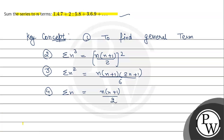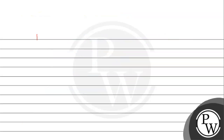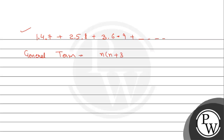Now, using this concept, let's solve the question. The series given is 1·4·7 + 2·5·8 + 3·6·9 + ... and so on. The first step: find the general term. The general term Tₙ is equal to n(n+3)(n+6).